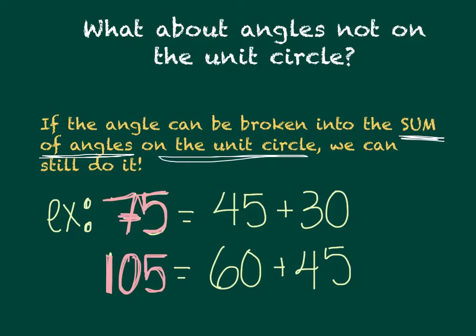So, for example, an angle like 75 degrees can be written as the sum of 45 and 30, both of which are on the unit circle, and both of which we know the sine and cosine of. Another example would be 105 degrees. That can be broken into 60 degrees and 45 degrees. So we can find exact values for these two angles.